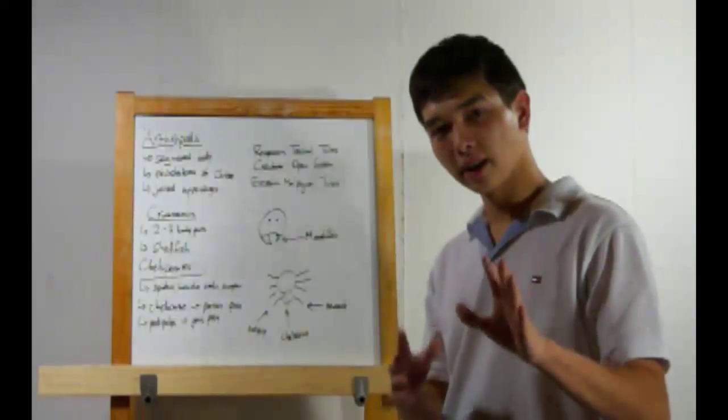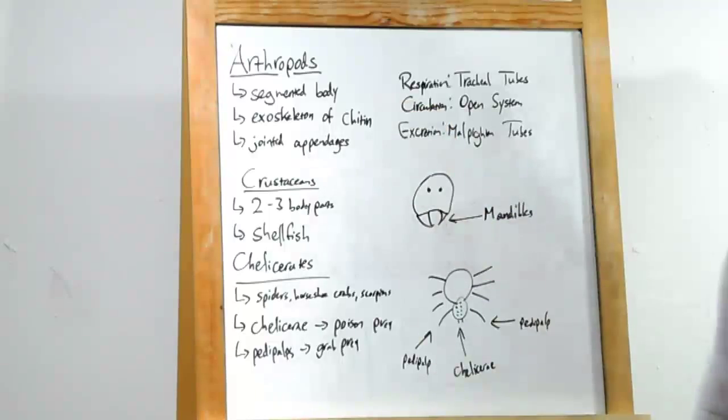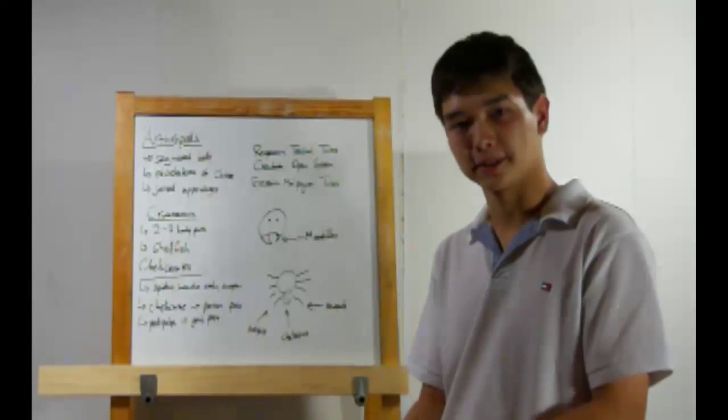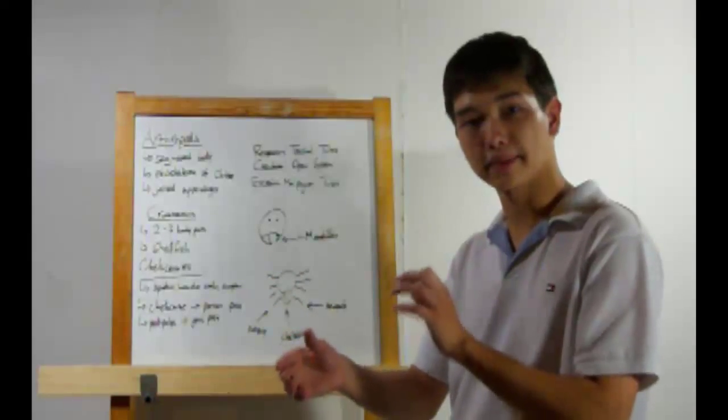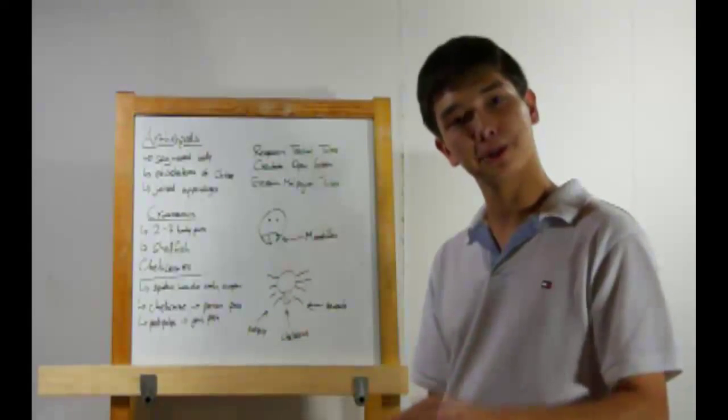Now for some general characteristics. Arthropods all have segmented bodies. This allows for greater degree of specialization. One segment can do one thing, another segment can do another, which helps a lot evolutionarily.